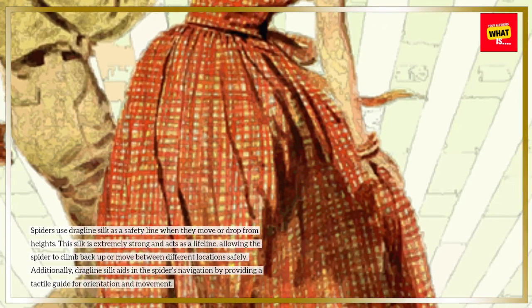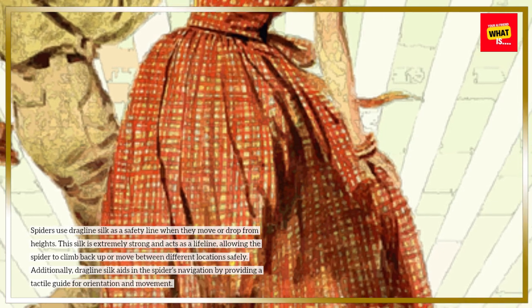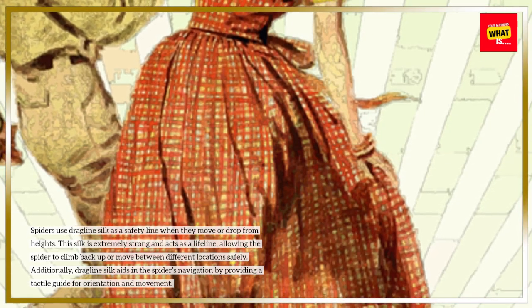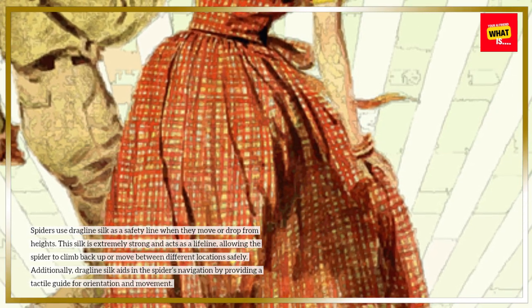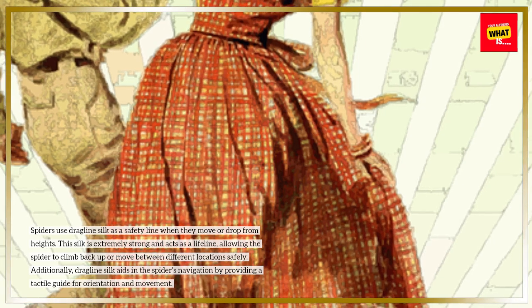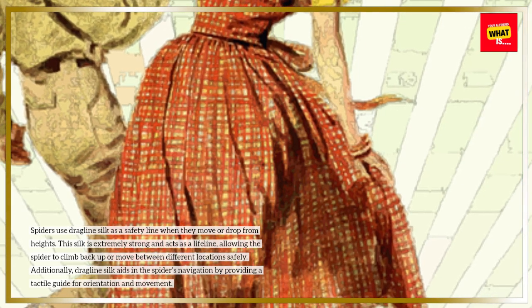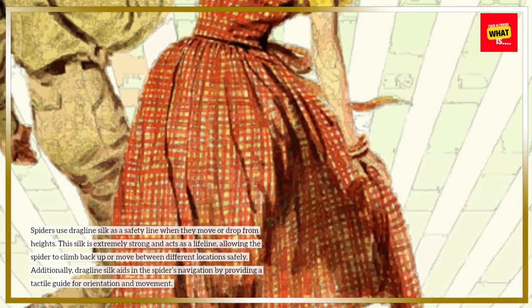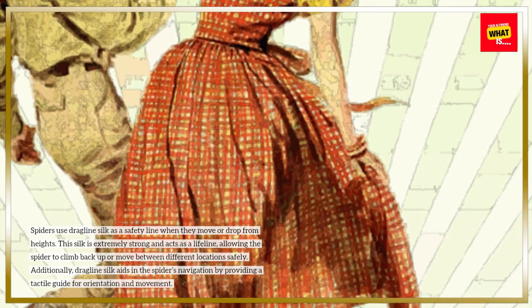Spiders use dragline silk as a safety line when they move or drop from heights. This silk is extremely strong and acts as a lifeline, allowing the spider to climb back up or move between different locations safely. Additionally, dragline silk aids in the spider's navigation by providing a tactile guide for orientation and movement.